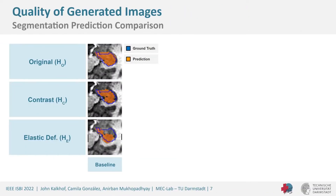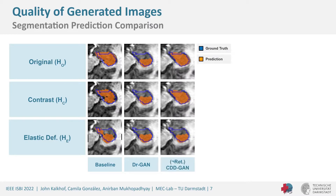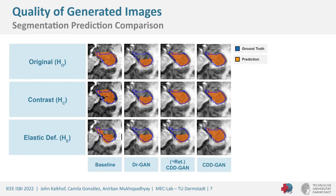Looking at the quality of generated images: the U-Net baseline shows good performance on the training dataset but much worse performance on the contrast and elastically deformed sets. Diagon shows similar performance across all three cases but with generally poor segmentation quality. CDDGAN without retraining performs well on the original and contrast datasets but not on the elastically deformed one. The full CDDGAN performs well across all three domains with very good segmentation quality.